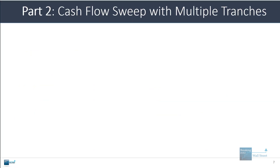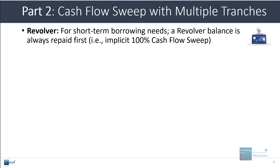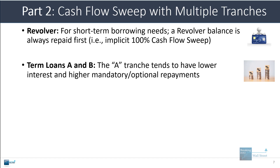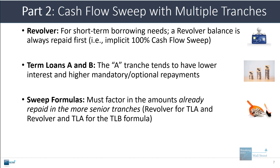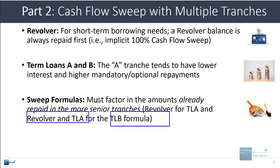The next topic is what happens when you have a cash flow sweep with multiple debt tranches. Usually you have a revolver, a term loan A, and a term loan B. The revolver handles short-term borrowing needs and its balance is always repaid first — there's effectively a 100% cash flow sweep on the revolver before anything else is repaid optionally. Then, term loan A tends to have lower interest but higher mandatory and optional repayments. The sweep formulas must factor in amounts already repaid in more senior tranches — when calculating the sweep for term loan B, you must account for both the revolver and term loan A.